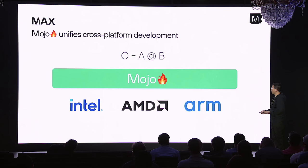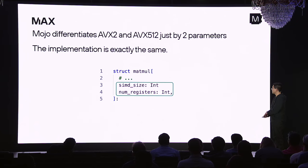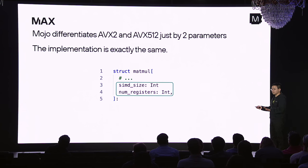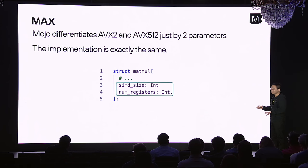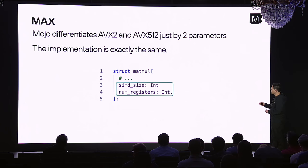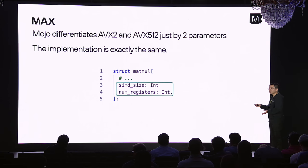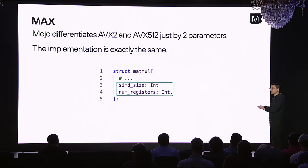Let's take a deeper look at how this works exactly, using matrix multiplication as an example. If I want to support both AVX2 and AVX512, I think at the algorithm level. The difference between architectures comes down to just two things: the SIMD size and the number of SIMD registers you can use. With Mojo, we can easily express this by adding two parameters to our matrix multiplication struct, while the internal implementation doesn't have to change at all.